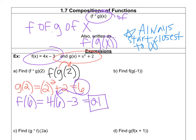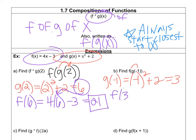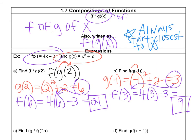Let's do another example. On B, it says find F of G of negative 1. Once again, I'm going to start with the G equation because it's closest to the negative 1. So I'm going to plug negative 1 into the G equation — that would become negative 1 squared plus 2. Remember, always put negatives in parentheses whenever you're squaring them. So negative 1 squared is positive 1, and then 1 plus 2 is 3. But I can't stop there — I have to take that and plug it into the F equation. So inputting a 3: 4 times 3 minus 3 equals 12 minus 3, which is 9.